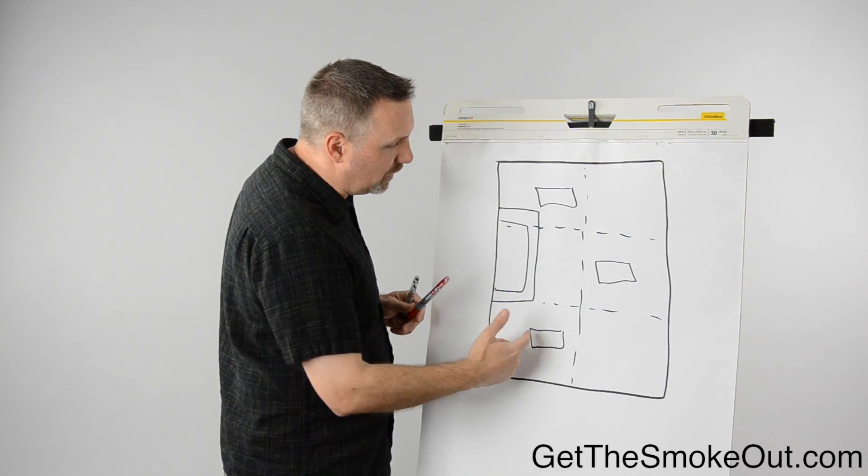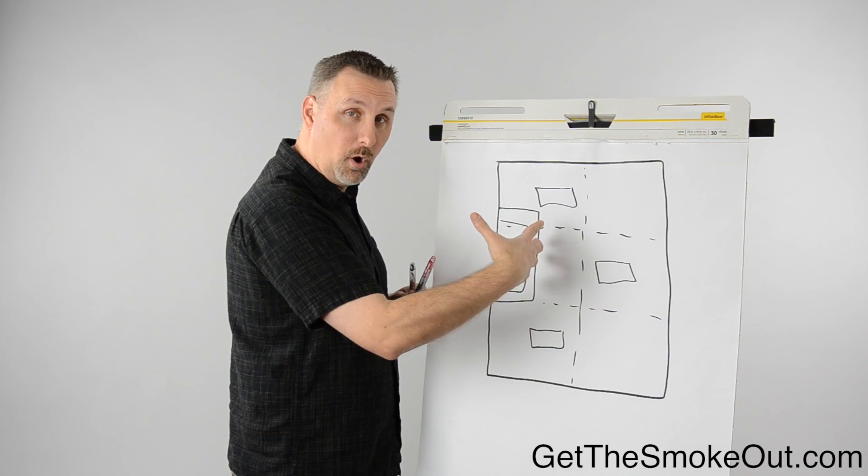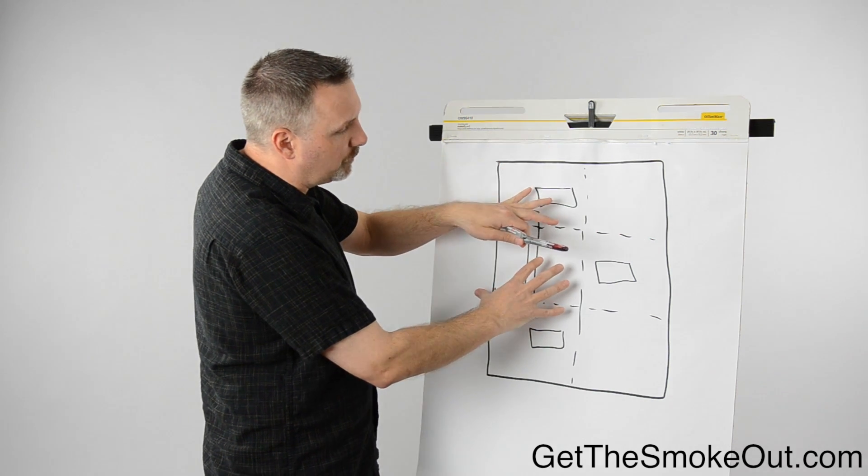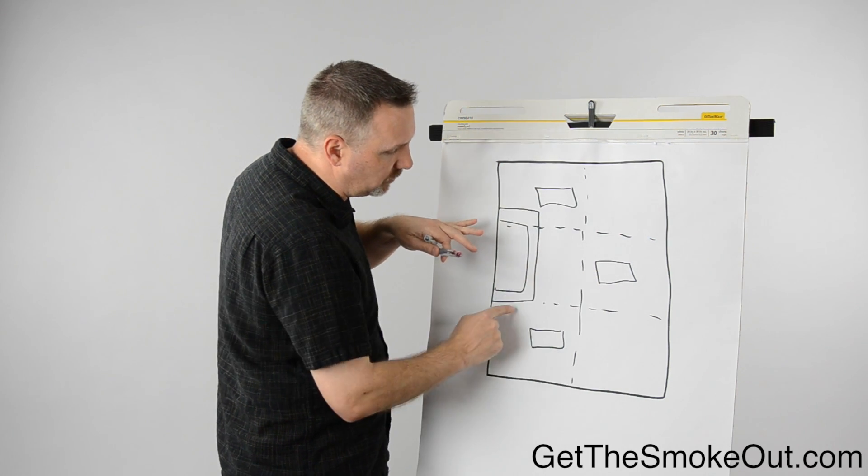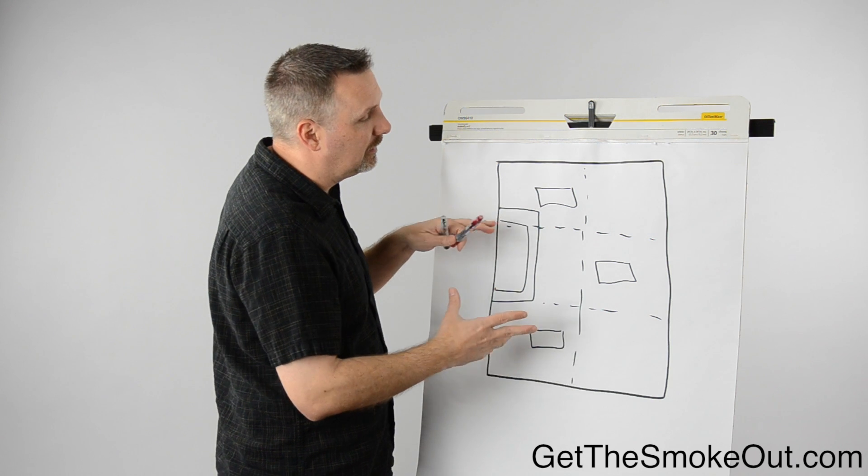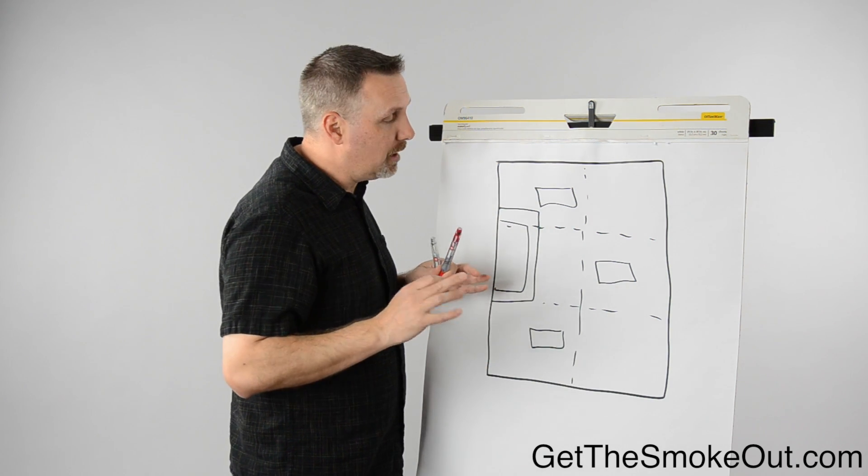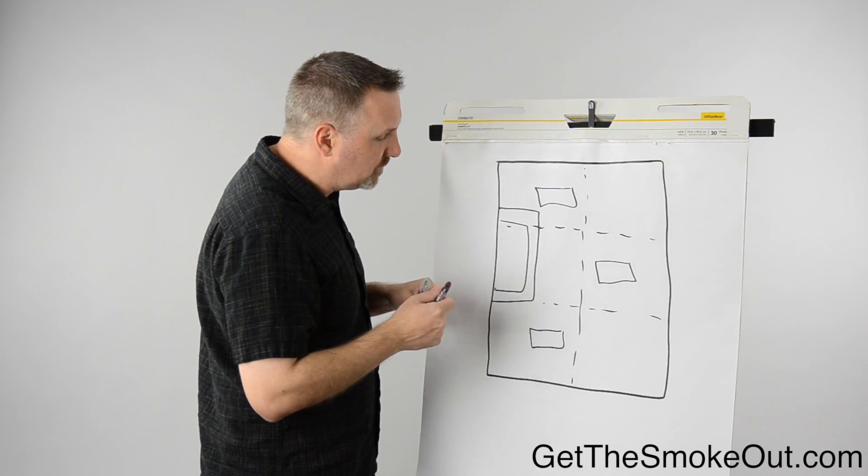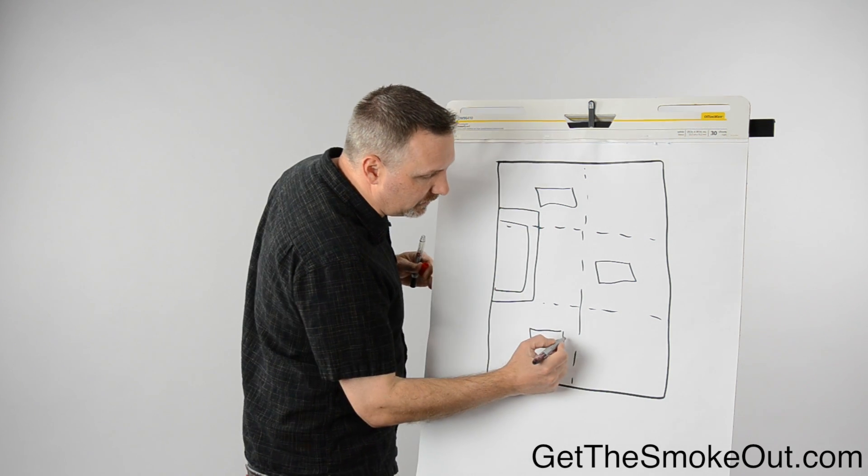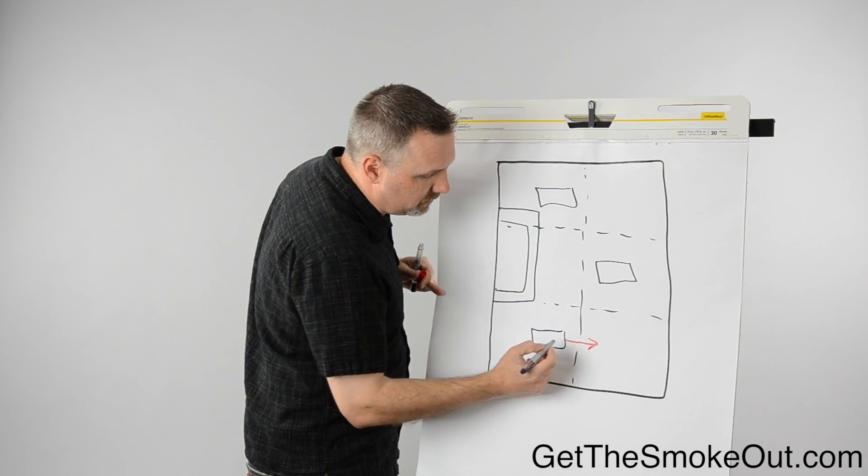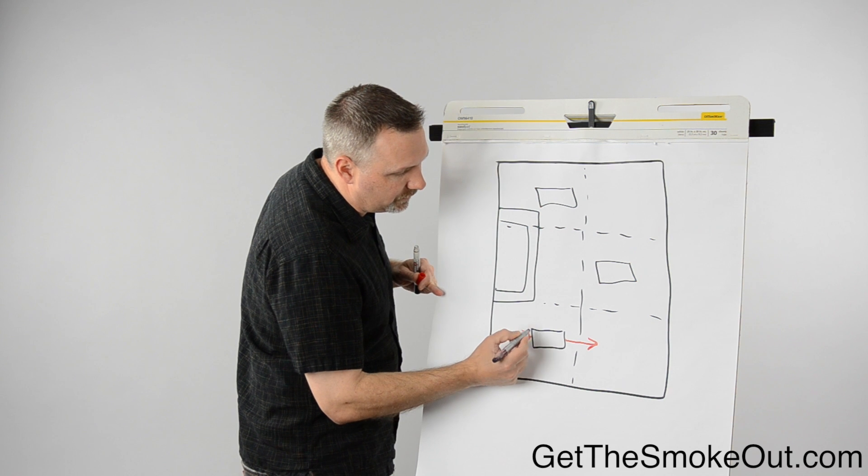Some people might think, well, position the intake pointing at the bar so that if this is where most of the smoke is, you've got the intake drawing directly into these three units. Again, that may make some sense, but let me show you the difference. I recommend that we alternate the airflow directions.